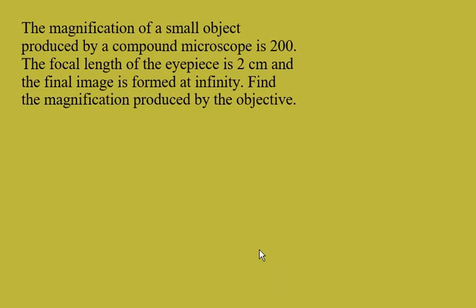Here is another CPACC question. The magnification of a small object produced by a compound microscope is 200. The focal length of the eyepiece is 2 cm and the final image is formed at infinity. Find the magnification produced by the objective.